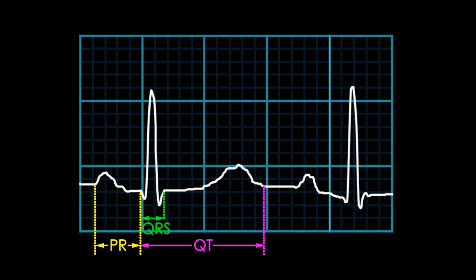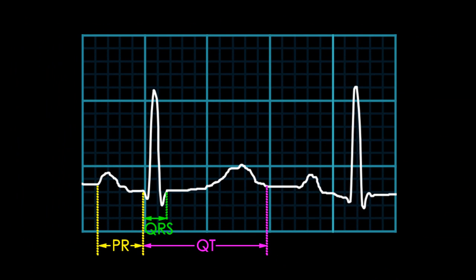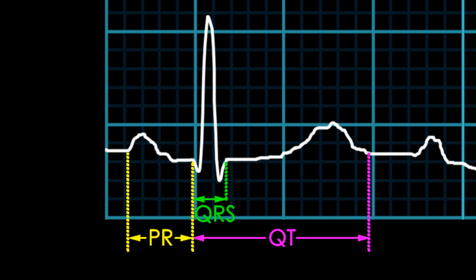So these are our basic EKG measurements. You can see here we've got the PR interval, the QRS duration, and the QT interval. The PR interval represents the time from the beginning of atrial depolarization to the beginning of ventricular depolarization. It's measured from the start of the P wave to the start of the QRS complex.